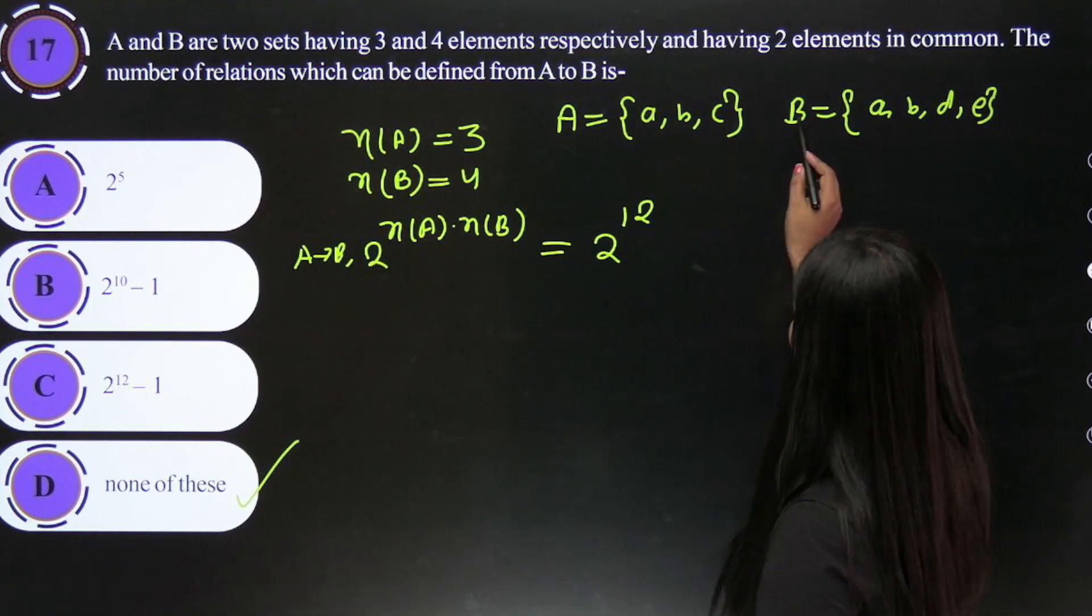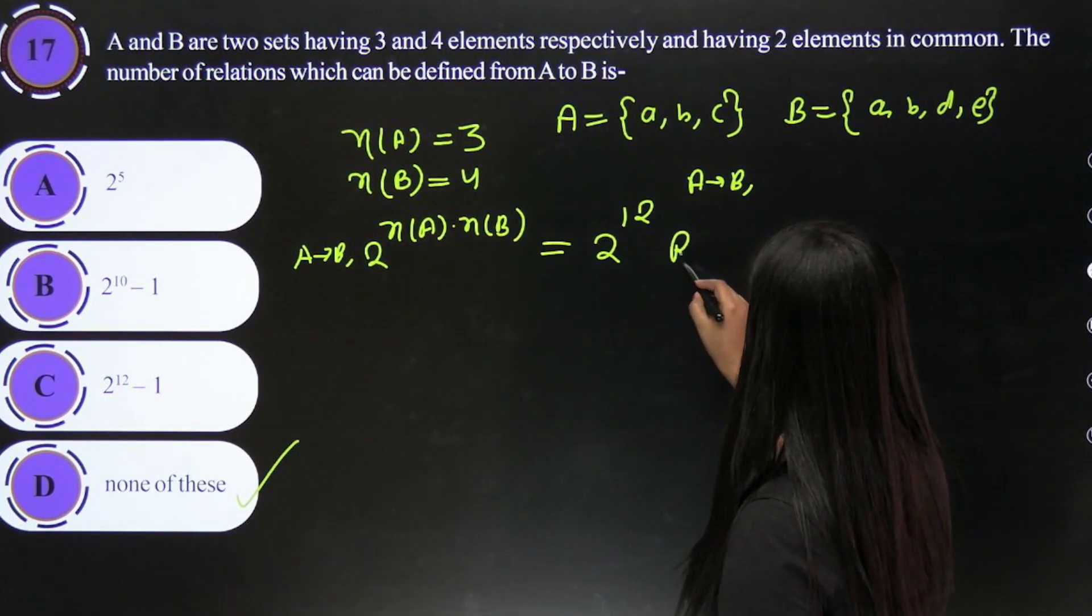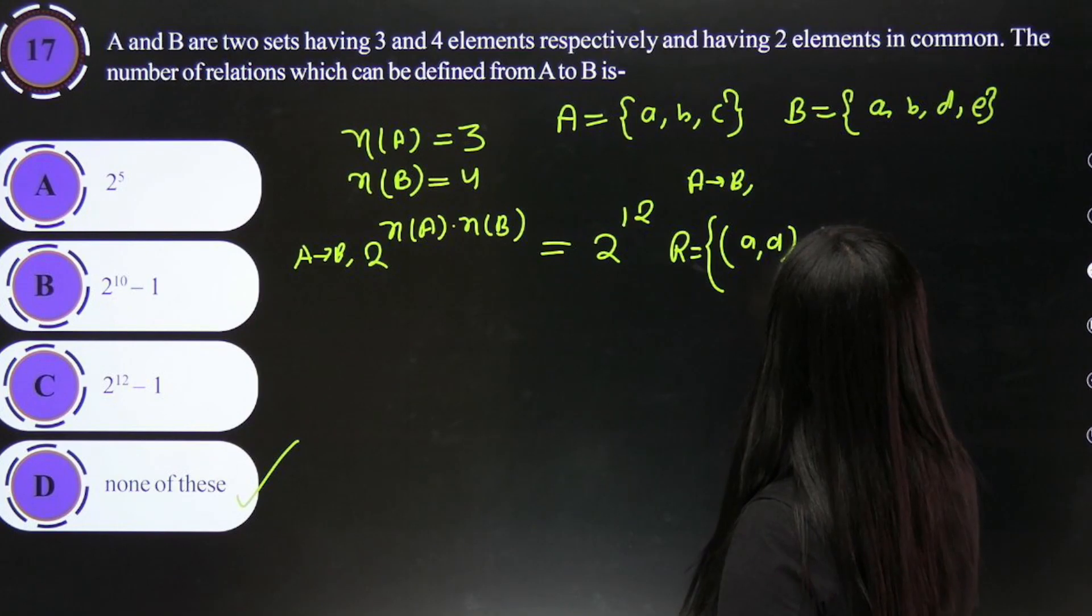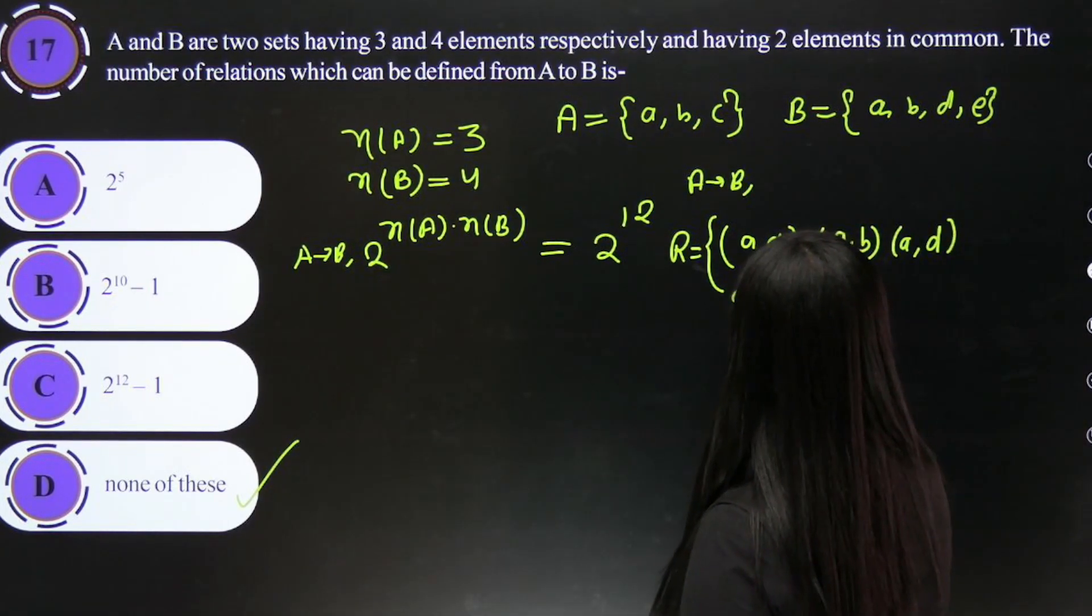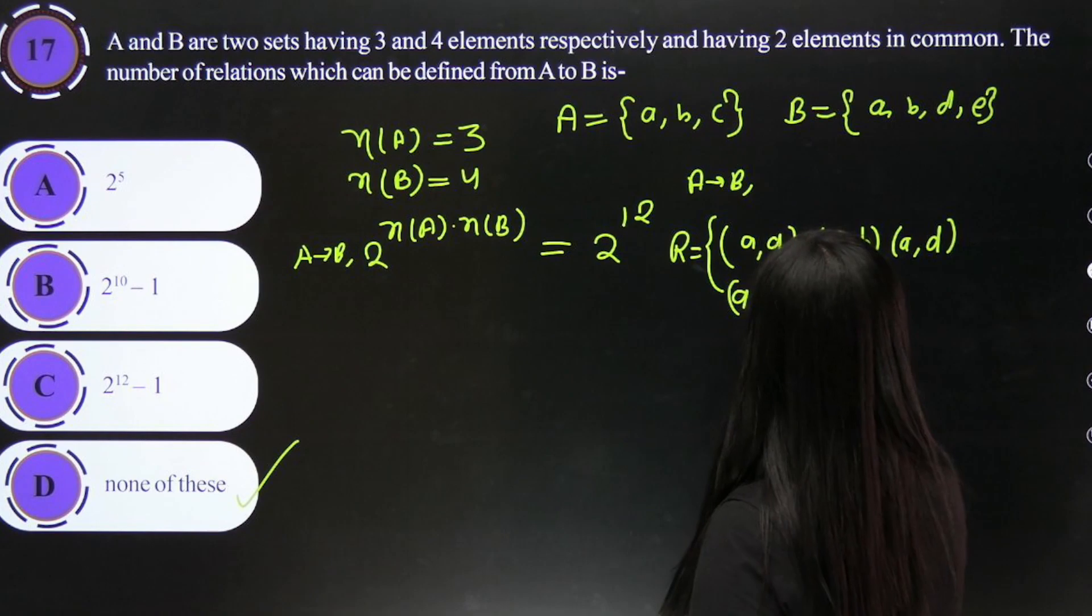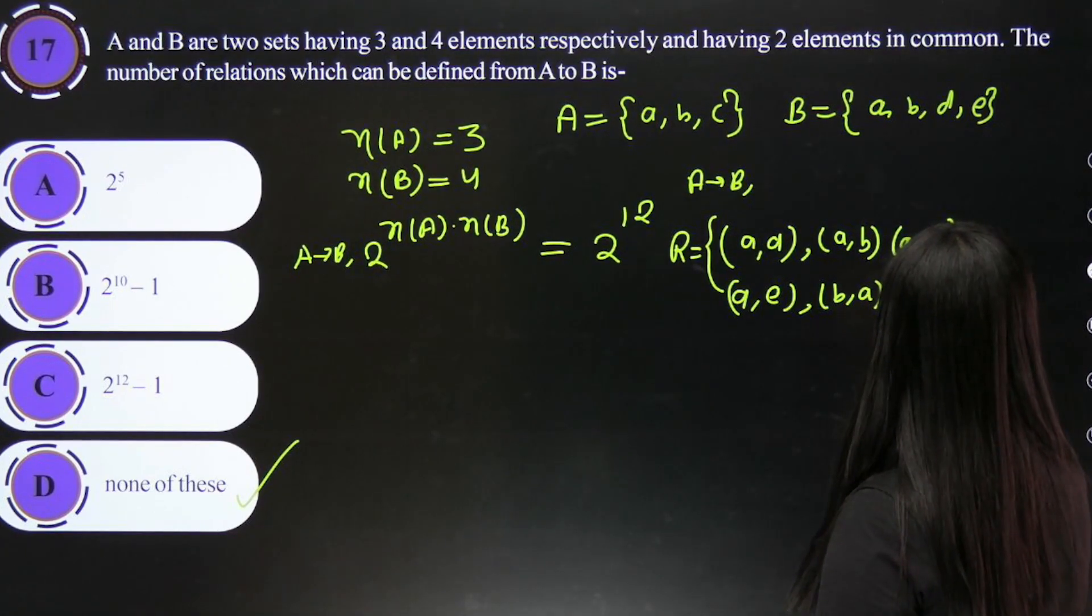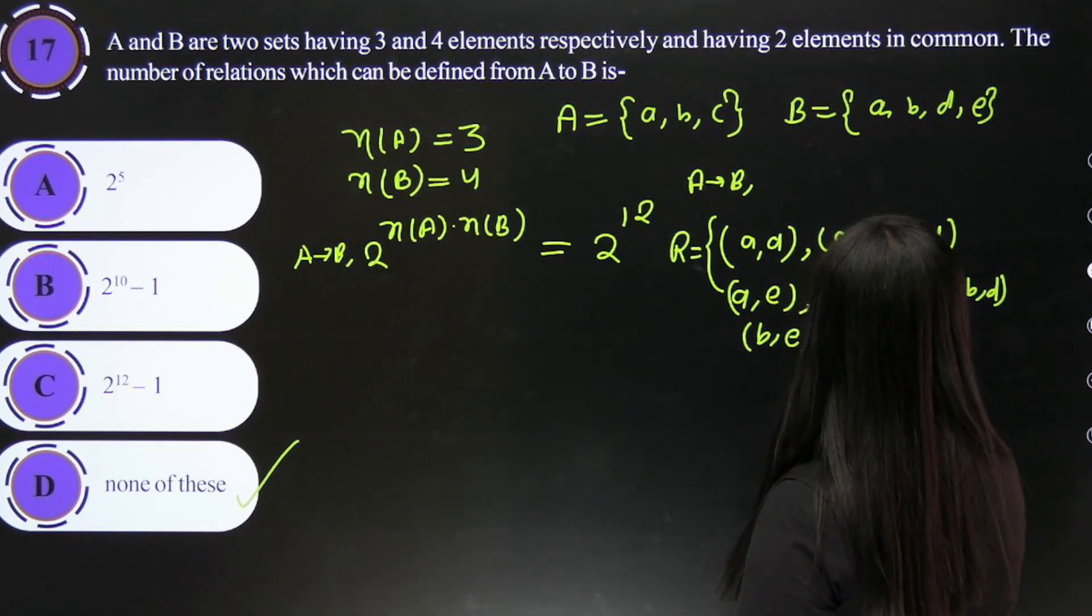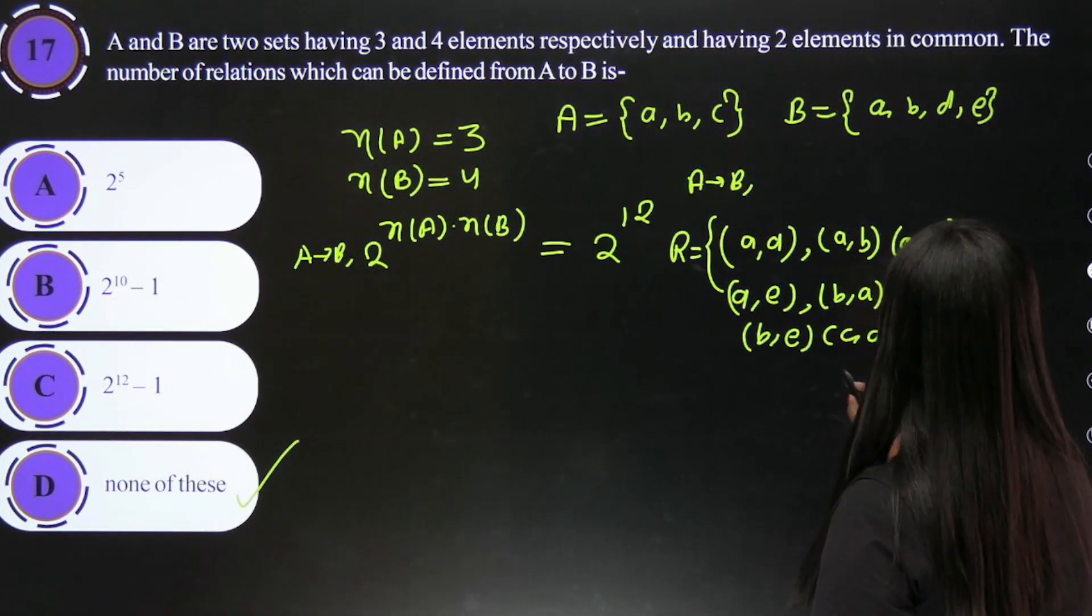This is how we will see it. We will form ordered pairs for relation R: (a,a), (a,b), (a,d), (a,e), (b,a), (b,b), (b,d), (b,e), (c,a), (c,b), (c,d), (c,e).